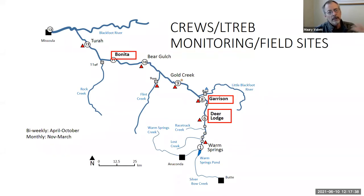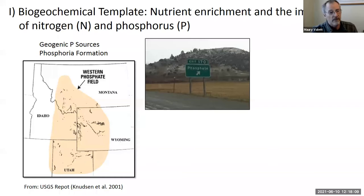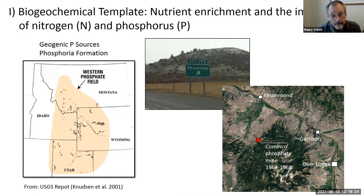Thinking about this 200-kilometer system as a biogeochemical template, one thing we can characterize the whole river system as being is phosphorus-rich. Throughout the upper Clark Fork, phosphorus is plentiful. This is because the river is in the phosphoria formation — part of the western phosphate fields. There's a phosphate mine in the hills outside of Drummond and Garrison that was operational in the mid-1960s. The landscape is full of phosphorus.